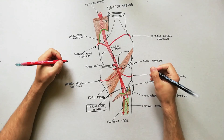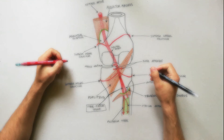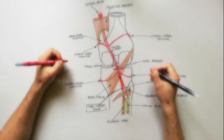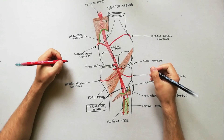The genicular anastomosis is an arterial anastomosis around the knee joint formed by branches of the popliteal, anterior tibial, posterior tibial, femoral, and profunda femoris arteries. The anastomosis takes place as follows.